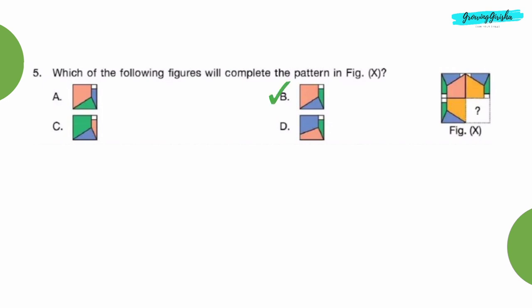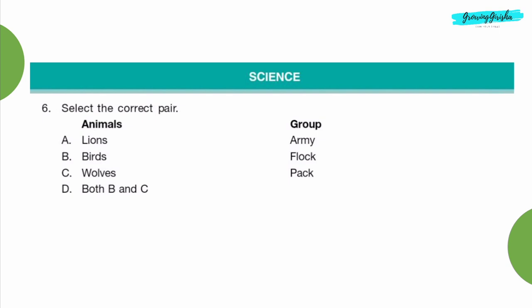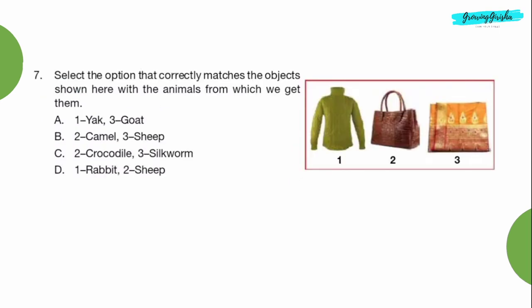Science, question 6: Select the correct pair. Option D, both B and C. Question 7: Select the option that correctly matches the objects shown here with the animals from which we get them.